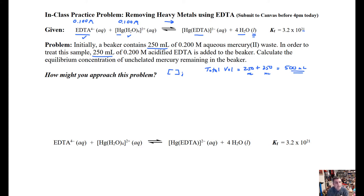If you just tried to solve right here, you'd have a problem. Even though you can set up a nice table, the K is too large to apply a simple approximation — it would give you really big jumps in concentration. You could argue the math is trivial here because it's one-to-one stoichiometry, but I want you to think about future examples. So I'm going to assume the reaction goes in the forward direction pretty much to completion.